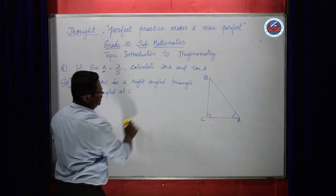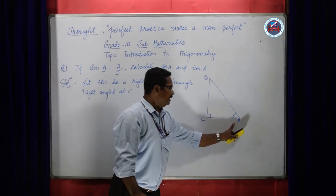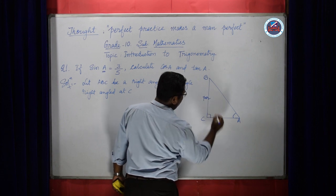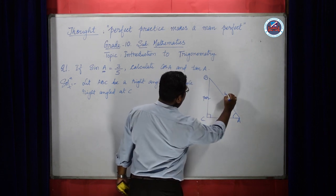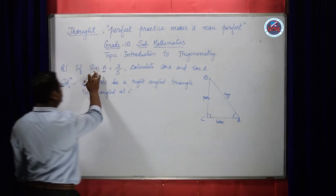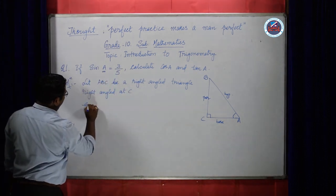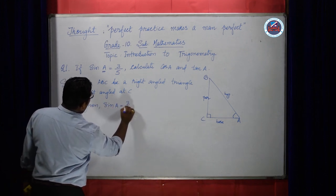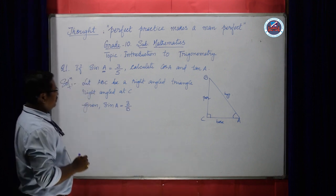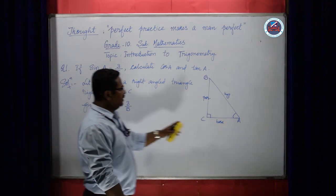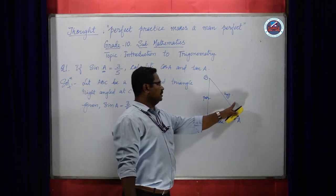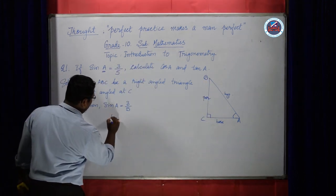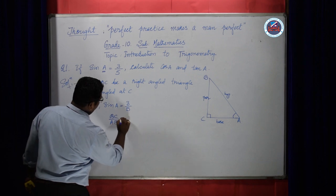You can see the acute angle is A. So from your formula, you know that this side is your perpendicular, this is your base, and this is your hypotenuse. From the given value, sin A is 3 by 5. So write down the given value and remember your formula: sin A is defined as perpendicular to its hypotenuse, that is BC by AB. So BC by AB equals 3 by 5.